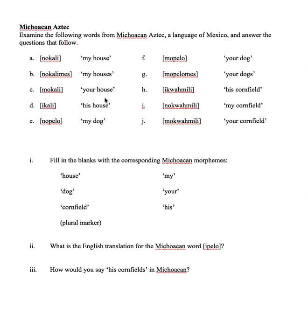Incidentally, this exercise is very similar to a puzzle called a CryptoQuip. CryptoQuips often appear in newspapers and it's basically where one letter represents another letter throughout the puzzle, and it usually is some sort of joke or silly pun. That kind of process in solving a CryptoQuip is very similar to the process that you use to solve a morphological analysis problem. So solving CryptoQuip puzzles is great practice for morphological analysis, and I guess vice versa.